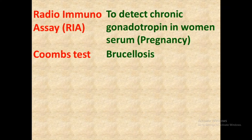Radioimmunoassay, or RIA, is used to detect chorionic gonadotropins in women's serum — that is, in pregnancy. So RIA is used to detect chorionic gonadotropin in women's serum during pregnancy. Additionally, the Coombs test is also used for brucellosis. The tube agglutination test and the Coombs test are both used for the diagnosis of brucellosis.